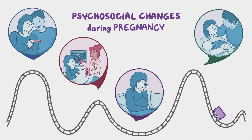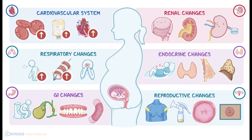Pregnancy causes physiological changes throughout the mother's body. The uterus enlarges to accommodate the growing fetus. Breasts become fuller and prepare for lactation. Blood volume and cardiac output increase in the cardiovascular system. Breathing rate increases to supply more oxygen. The kidneys work harder, leading to more frequent urination. Digestion slows, sometimes causing heartburn or constipation. Blood plasma volume rises, sometimes causing mild anemia.